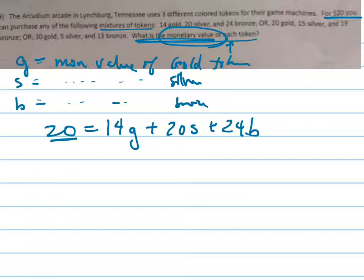Or, let me change colors here. For $20, you could also get 20 gold, 15 silver, and 19 bronze.